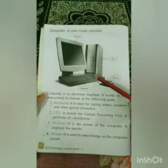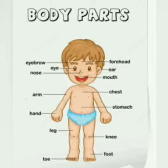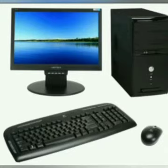Now let's understand about its parts. But before this, as you can see in this picture, our body is made up of different parts — eye, mouth, finger, head, hair, etc. I've shown you this picture just to tell you that our body is made up of different parts. The same way, a computer is also made up of different parts. A computer can only work when all its parts work together. A computer is made up of four main parts.